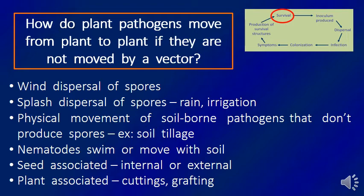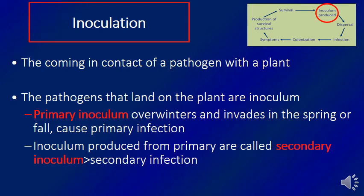After the pathogen finishes producing survival structures, these structures produce two types of inoculum: primary inoculum or secondary inoculum. Primary inoculum can overwinter and invade plants in spring or fall, causing primary infection — it is the inoculum responsible for starting infection. If the pathogen produces new spores or inoculum during the growing season that can spread from infected to healthy plants during the same season, that is called secondary inoculum.